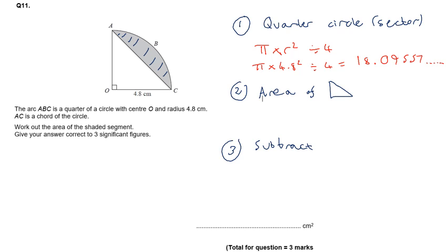Now the area of the triangle: the triangle is calculated by doing the base 4.8 times the height 4.8 and then half. So 4.8 times 4.8 divided by 2, which gives an area of 11.52.